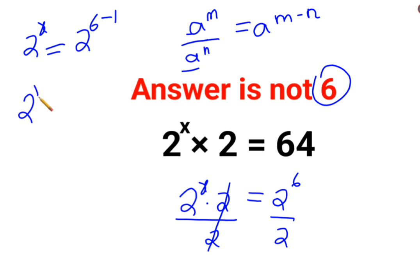So 2 raised to x equals to 32... sorry, not 32. It is basically 2 raised to 5. Now since the bases are same, we can directly equate the index saying that x equals to 5.